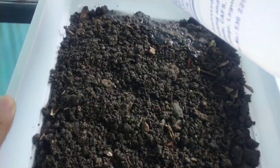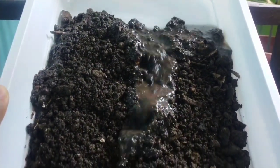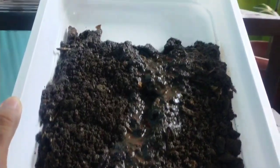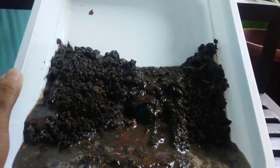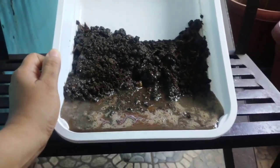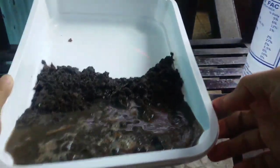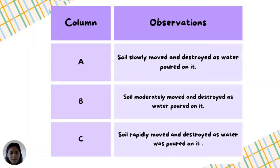These are some observations from the experiment. For Column A, soil slowly moved and was displaced as water was poured on it. For Column B, soil moderately moved and was displaced as water was poured on it. For Column C, soil rapidly moved and was displaced as water was poured on it.